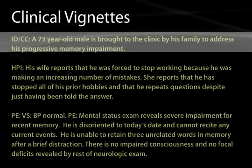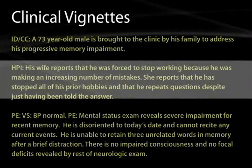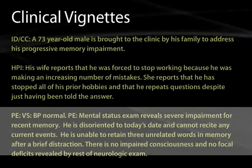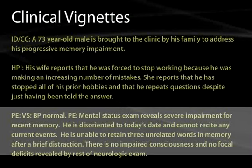Another clinical vignette: a 73-year-old male is brought to clinic for progressive memory impairment. His wife reports he stopped working due to increasing mistakes, has stopped all prior hobbies, and repeats questions despite just having been told the answer. On exam, blood pressure is normal. Mental status reveals severe impairment for recent memory — he is disoriented to the date, cannot recite current events, and is unable to retain three unrelated words after a brief distraction. There is no impaired consciousness and no focal neurological deficits. In this age group with progressive memory impairment, the primary consideration is Alzheimer's disease, with brain imaging likely showing marked hippocampal atrophy.